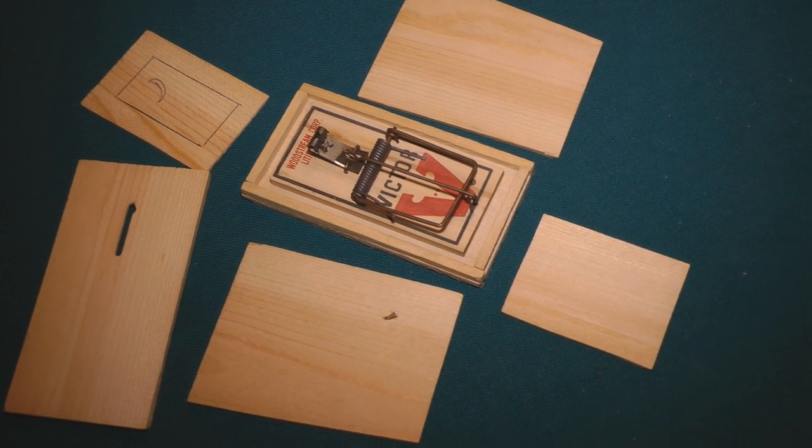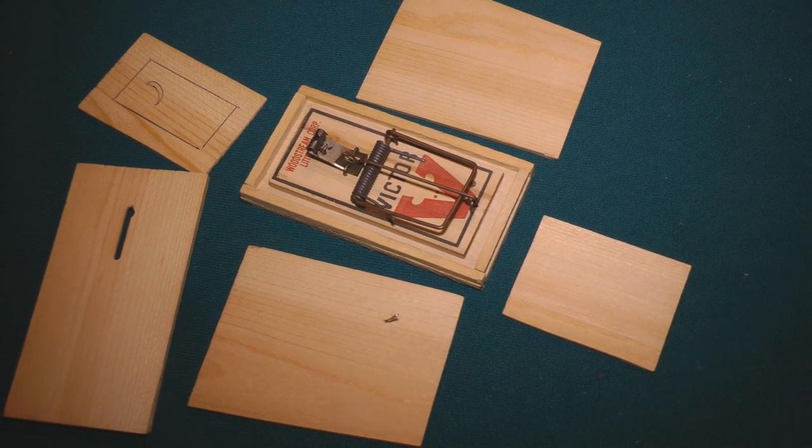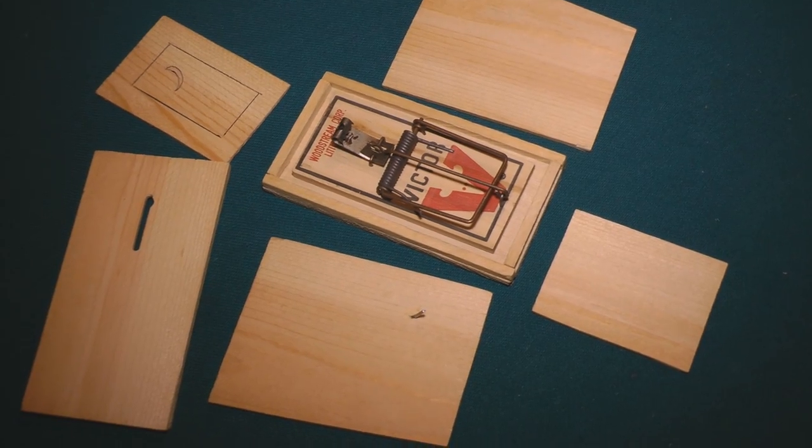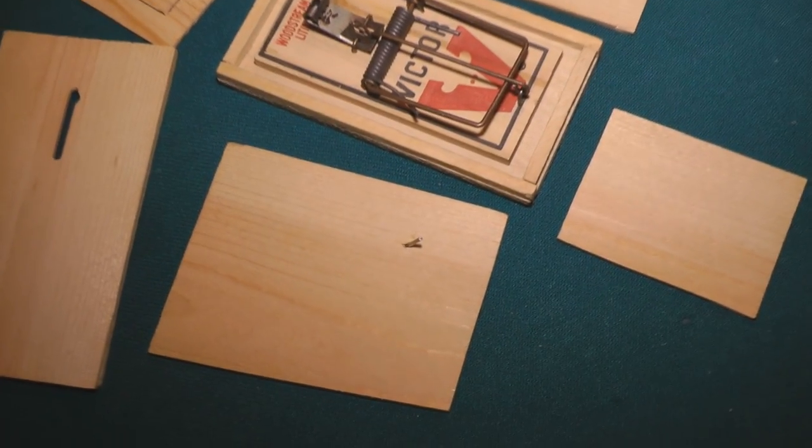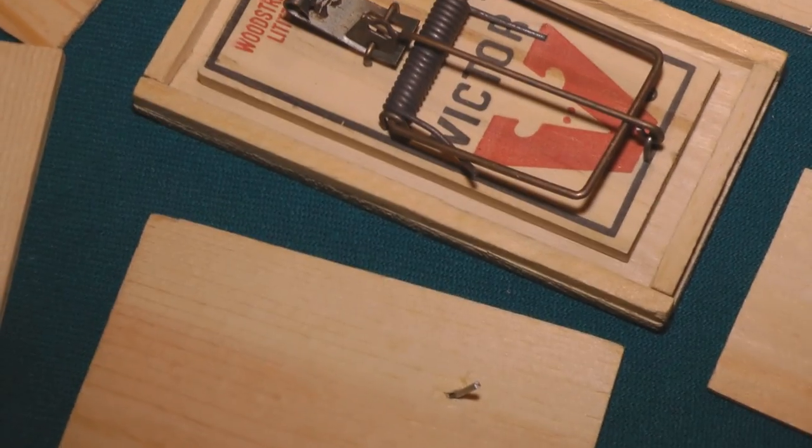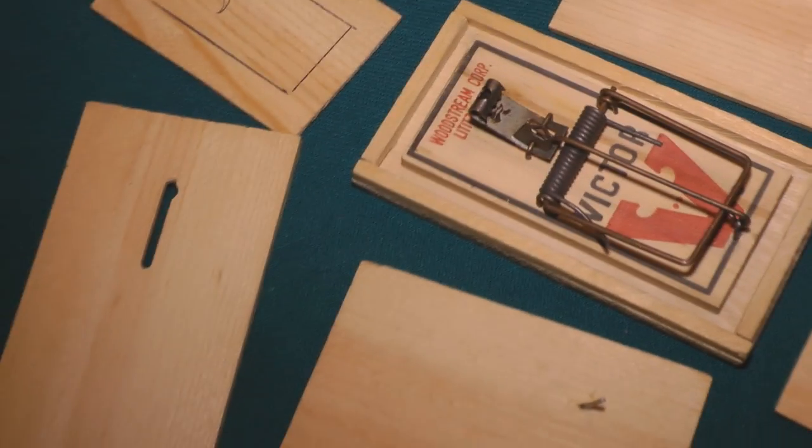Just make the base about three-eighths of an inch bigger than the mousetrap each way. These pieces of wood are about an eighth of an inch thick, and then you can see here that we've just got a small nail put through for the trigger to set the whole thing off.